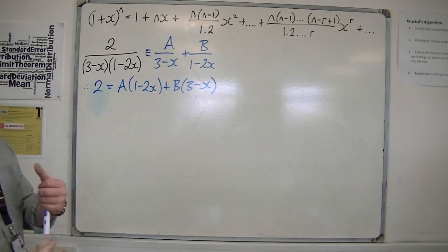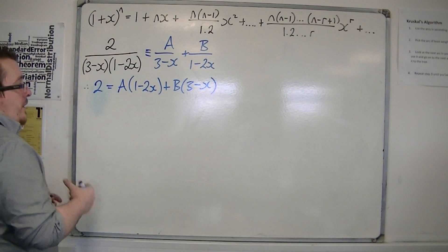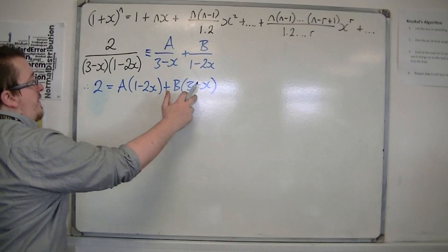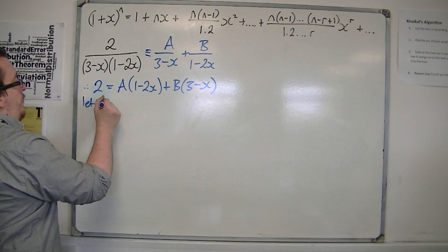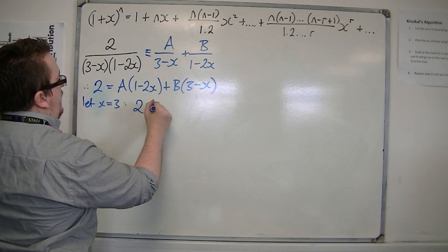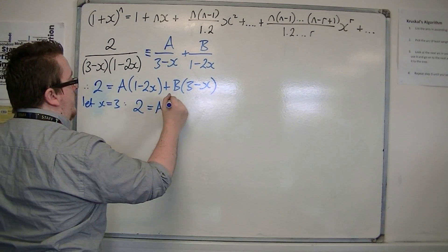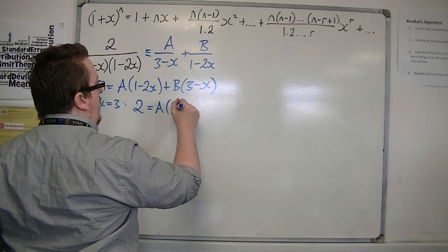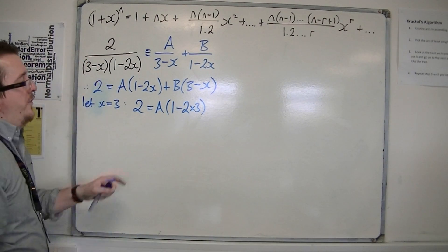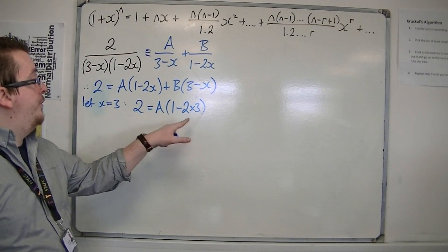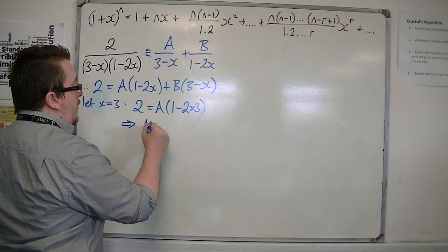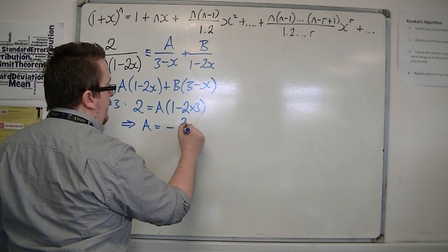Now I'm going to choose values of x to eliminate brackets and get A and B by themselves. I'm going to choose x equals 3 to get rid of that bracket. So I get 2 is equal to A times (1 minus 2 lots of 3), that's 1 take away 6, which is minus 5. Dividing both sides by minus 5, so A is minus 2 fifths.